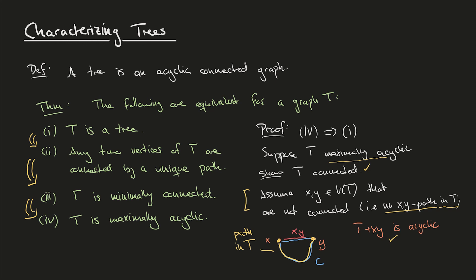Maybe this double contradiction is a little convoluted, so let's go through it again. We suppose T is maximally acyclic and need to show T is connected. We assume for contradiction that T is not connected — then we can add the edge xy between two vertices not connected to each other, and the result is still acyclic. But this contradicts the fact that T was maximally acyclic, so T has to be connected. With that, we've shown four implies one, closing the loop of implications and proving all statements are equivalent.